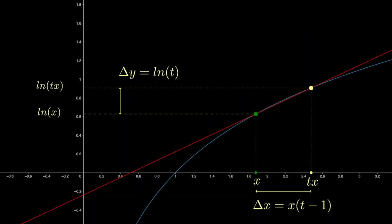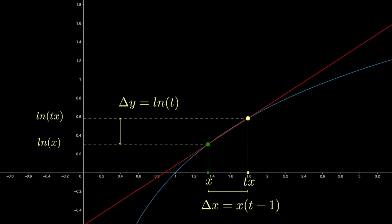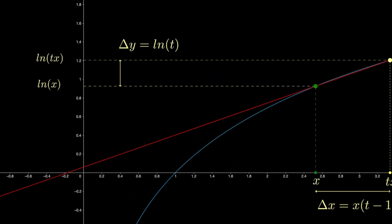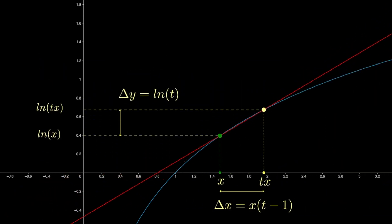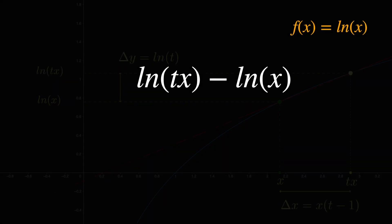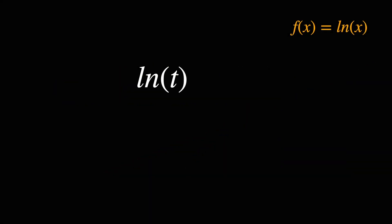And for logs, we can also see why the derivative has the form that it does. Again, the slope is rise over run, and the run is proportional to x. But in this case, the rise is constant. We can see that mathematically as ln of tx minus ln of x cancels out. But going deeper, we can look at x as an exponential function of y.